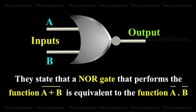They state that a NOR gate that performs the A or B, the whole complement, is equivalent to the function A complement and B complement.